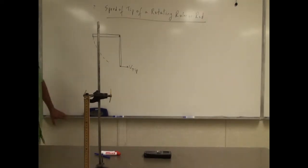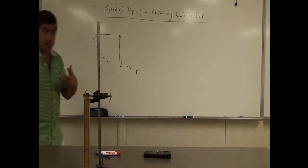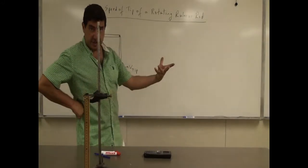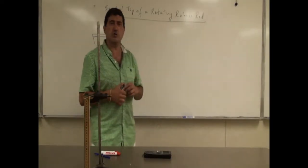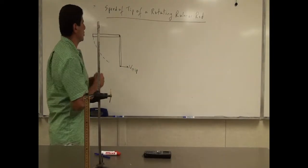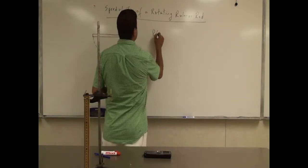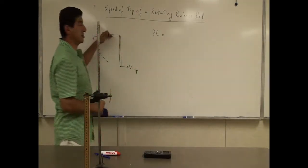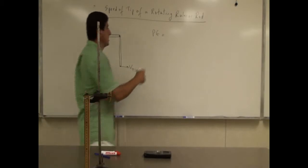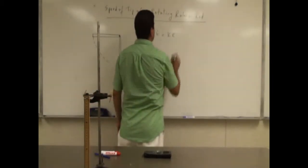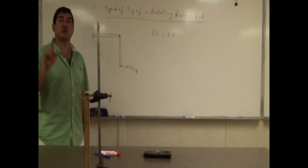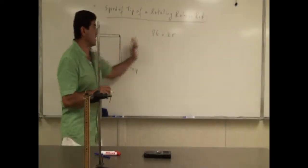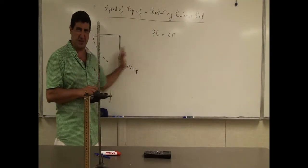This is a good problem because a lot of theory goes into being able to solve something like this correctly, and it can help test all those theories. So how do we answer this theoretically? If we use the potential energy stored here, it gets converted into kinetic energy. The kinetic energy that a rotating ruler or rod has is only rotational kinetic energy — it doesn't have translational kinetic energy.